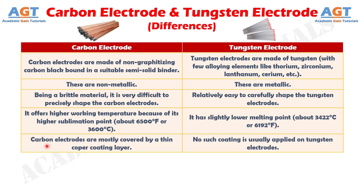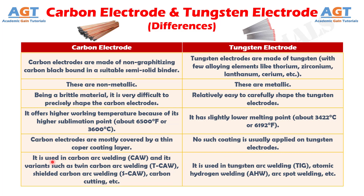No. 5: Carbon electrodes are mostly covered by a thin copper coating layer, whereas no such coating is usually applied on tungsten electrodes. No. 6: Carbon electrodes are used in carbon arc welding and its variants such as twin carbon arc welding, shielded carbon arc welding, carbon cutting, etc., whereas tungsten electrodes are used in tungsten arc welding, atomic hydrogen welding, arc spot welding, etc.